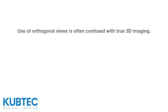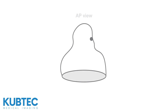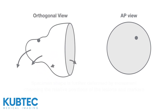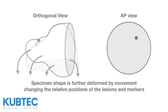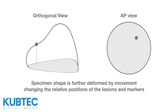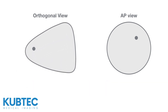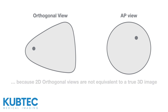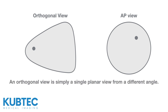Orthogonal views are often confused with true three-dimensional imaging. First, a traditional 2D image is taken. Then the specimen is rotated 90 degrees, and the specimen shape is further deformed by movement, changing the relative positions of the lesions and markers. In this case, both views show an apparently uninvolved margin, because 2D orthogonal views are not equivalent to a true three-dimensional image. In fact, an orthogonal view is simply a single planar view from a different angle.